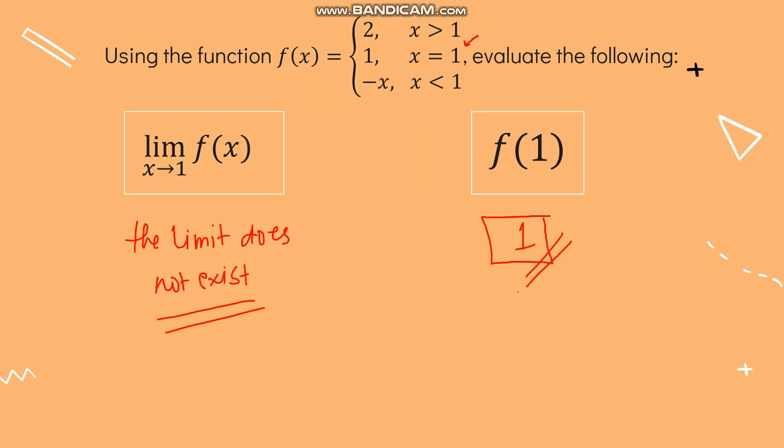In summary, a limit refers to the value that a function approaches as x gets closer to a certain value. The limit exists if both the right-hand and left-hand limits are the same. It does not exist if they approach two different values. That's it for today — I hope you learned something about the limits of a function.